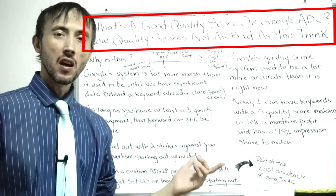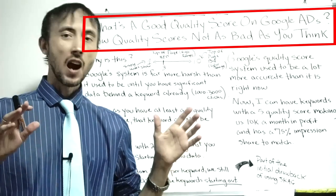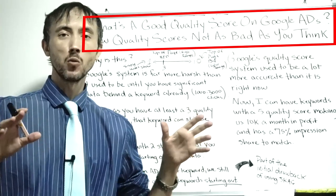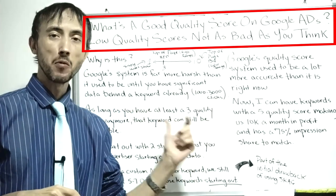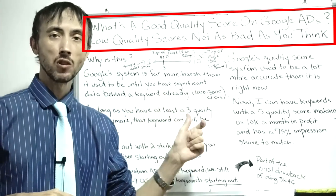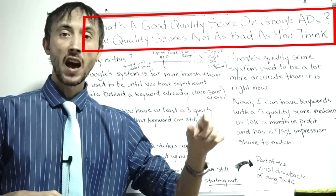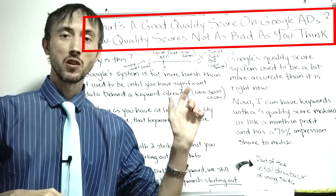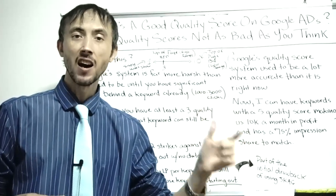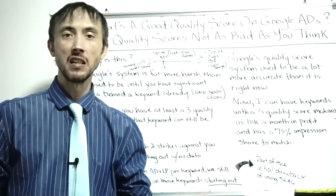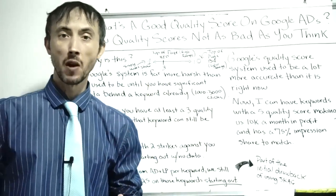This is a bit of an 'it depends' type of question to answer, which I hate that response more than anybody else, trust me. But I can give you a pretty good answer in terms of what to expect your quality score to be to actually make money with your ads, where the cutoff is, and where you're basically not going to make money anymore versus where you'll make a ton of money if you get the quality score to a certain range.